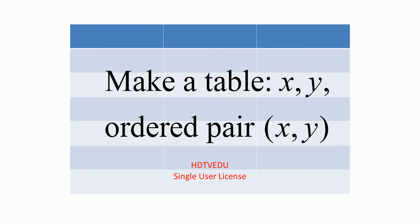Now that we have all these ordered pairs — negative 2 negative 2, negative 1 negative 1, 0 0, 1 1, 2 2 — now what do we do? Make a table. In that table, put x, put y, and put the ordered pair.